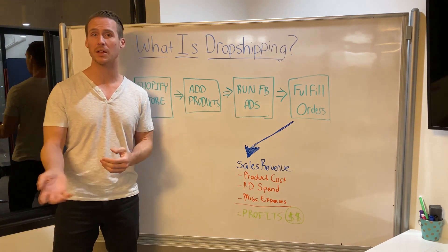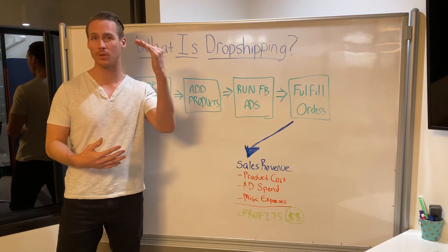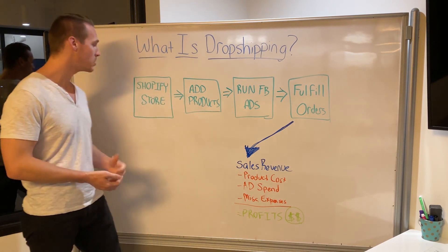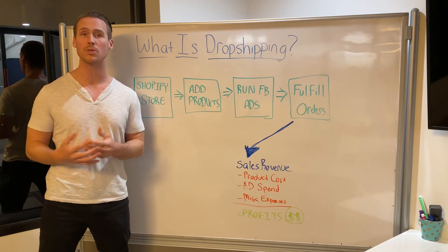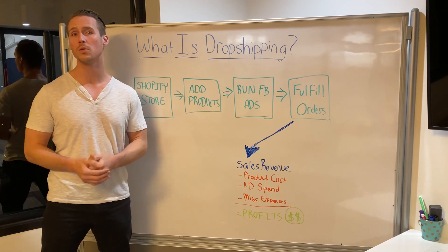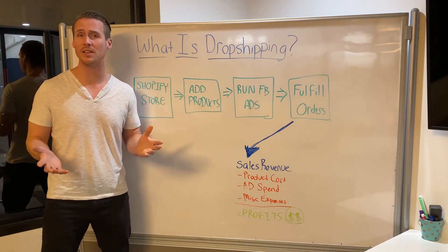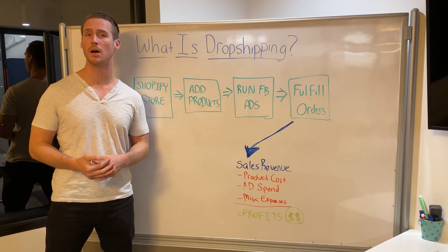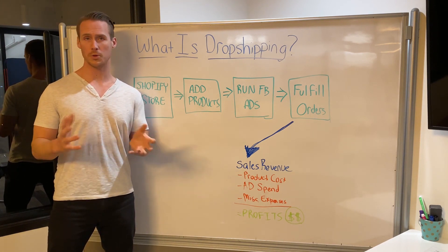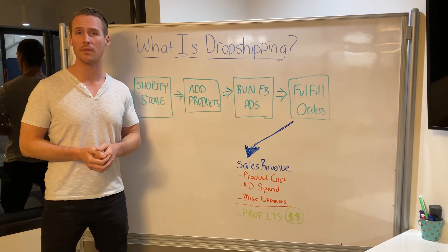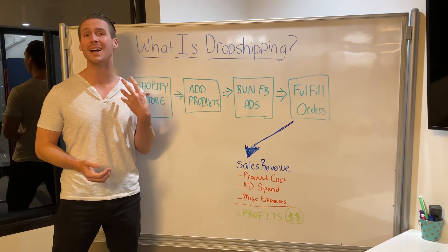When you find products you want to sell, you can add them sometimes with a click of a button using certain software, or on your own in minutes if you have the product description text and images or videos. For payment processing, the most common choices are PayPal and Stripe, and you can get set up with those in a matter of minutes.